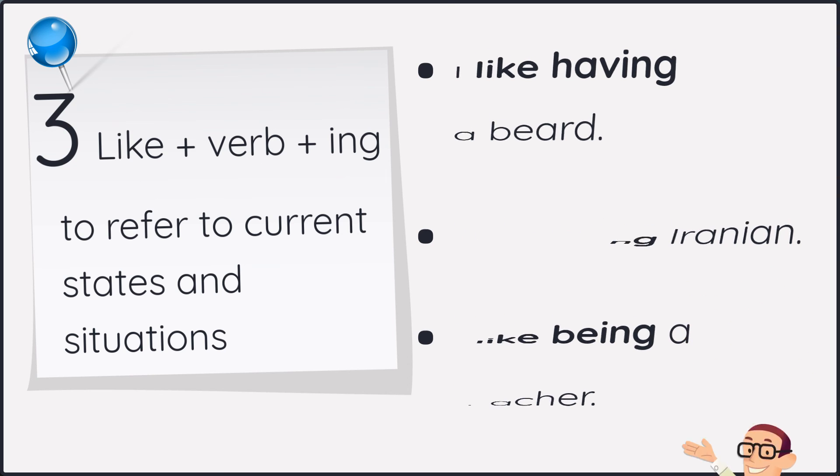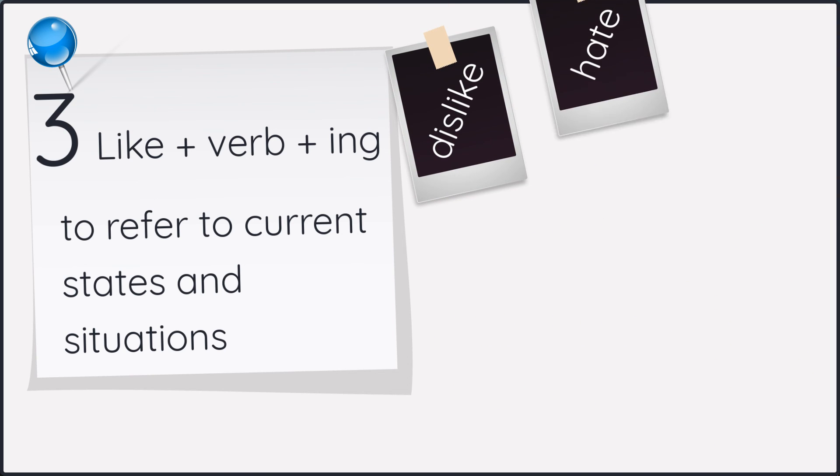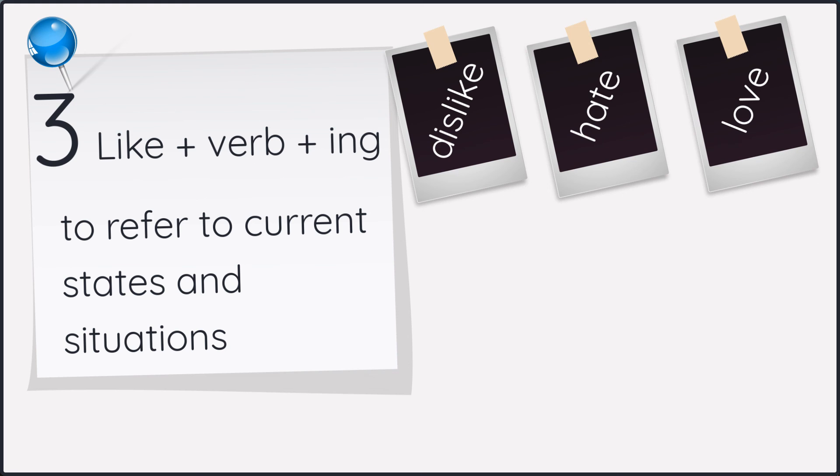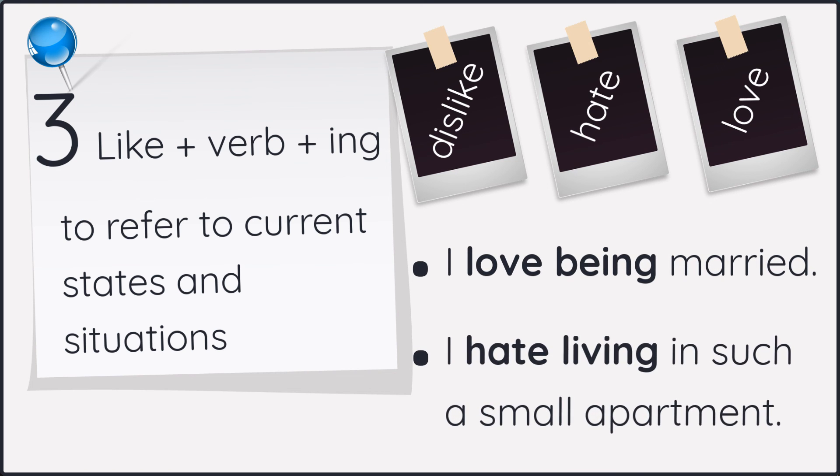This rule also works with dislike, hate, and love. I love being married. I hate living in such a small apartment. So we use this like plus verb plus ing to talk about the situation or one that is long term.